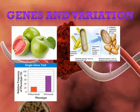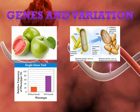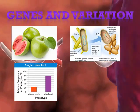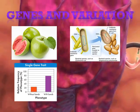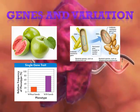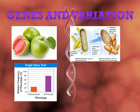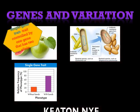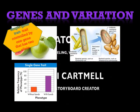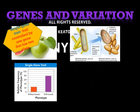Some organisms pass genes from one individual to another, or even from individuals of one species to another, through lateral gene transfer. The number of phenotypes produced for a trait depends on how many genes control that trait. In some snail species, some snails have dark bands on their shells and others don't — the presence or absence of dark bands is a single-gene trait.